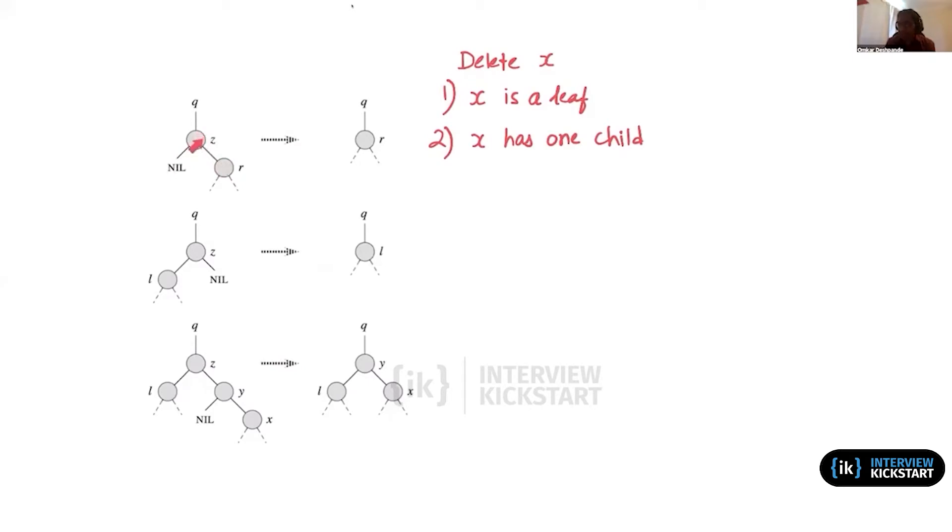We finally found z, and the left pointer points to null—it has a right child, a single right child. In that case, what we did is we just redirected the pointer from the parent of z to now point directly to the child, whatever that child is, r. By doing so, we removed z from the tree.